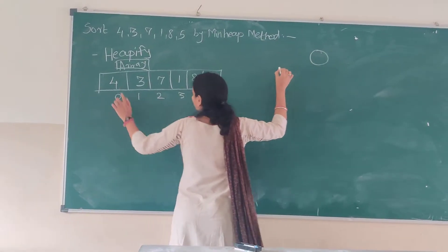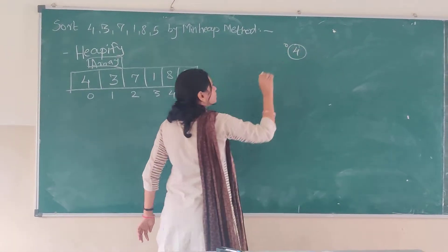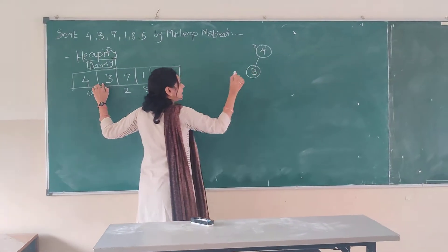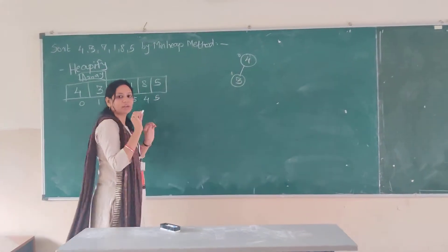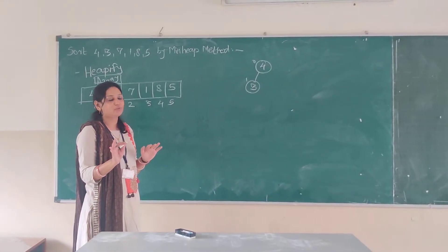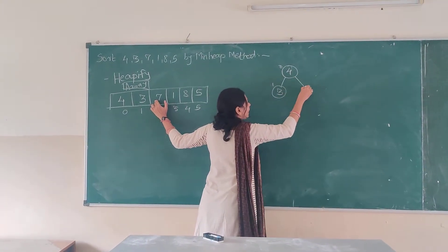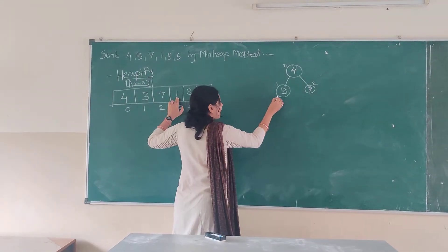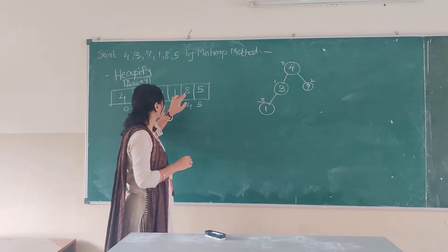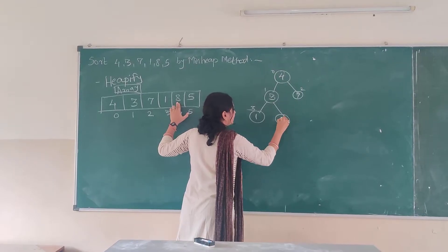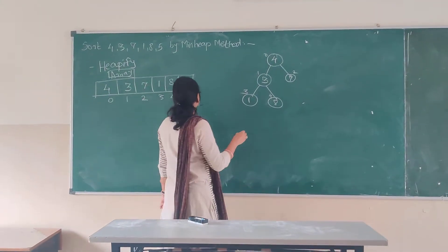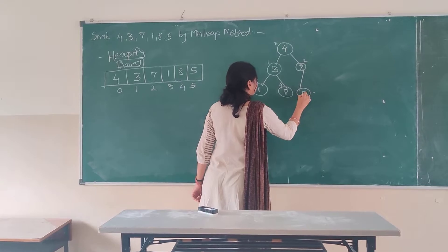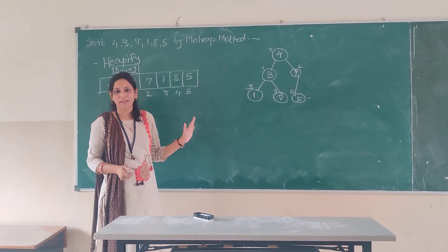At the root node at location 0 we have the number 4. At location 1 we have the number 3. Keep the location number also noted so that we don't get confused. At location 2 we have the element 7. At location 3 we have the number 1. At location 4 we have the number 8. This is our normal tree.